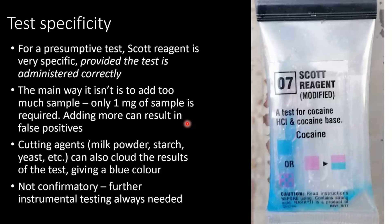In terms of specificity, Scott's reagent is relatively accurate compared with other presumptive tests, but it needs to be administered correctly. The main way that people don't administer the test correctly is by exceeding the one milligram of sample — adding more drug than required can generate a false positive result. Similarly, common cutting agents such as milk powder, starch, and yeast can cloud the results by also giving a blue colour that mimics cocaine. It's worth stating that none of these drug testing kits are confirmatory — you always need to do instrumental testing to confirm the result.